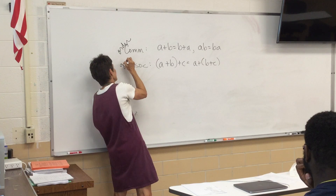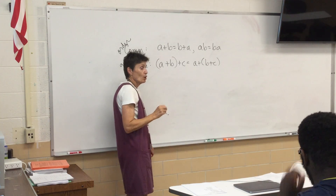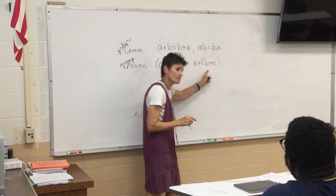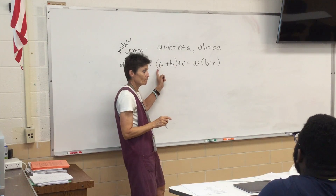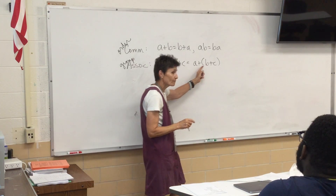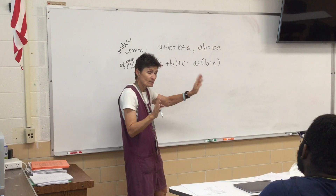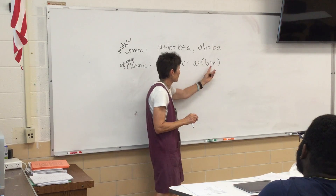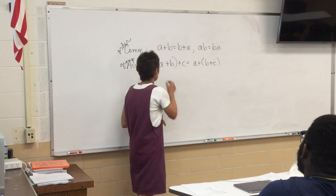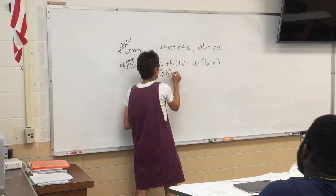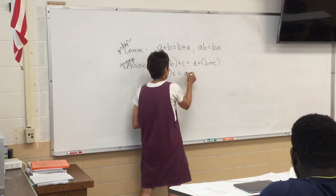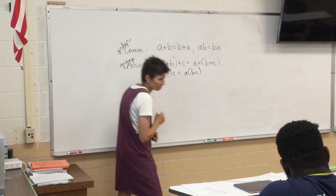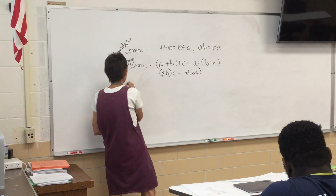The associative property — that's a grouping thing. So a plus b plus c is the same as a plus b plus c grouped differently. So commutative deals with order, and associative deals with grouping. If you look at the associative property, the letters are in the same order — it's not commutative — but the parentheses are in a different place. The same is true of multiplication.